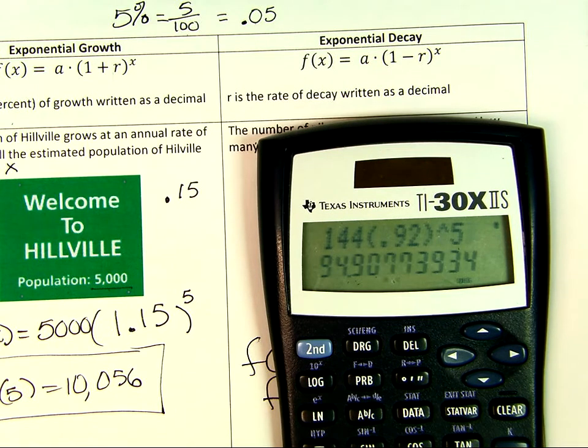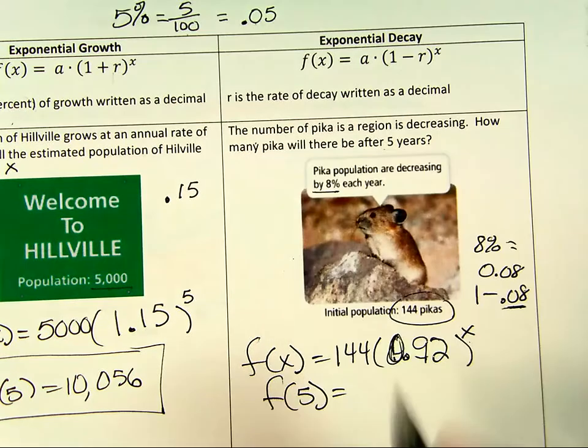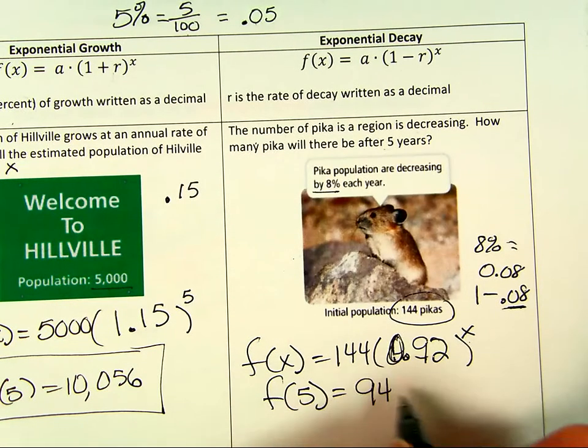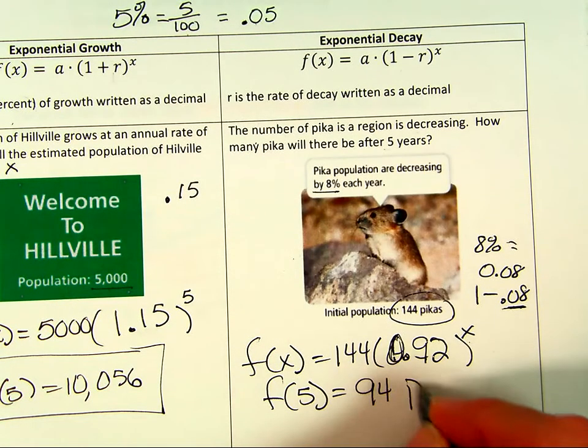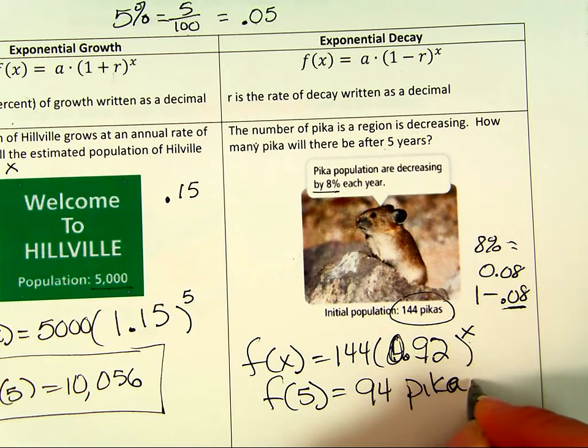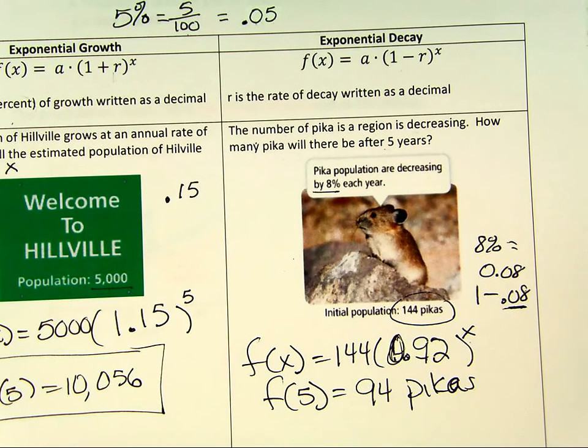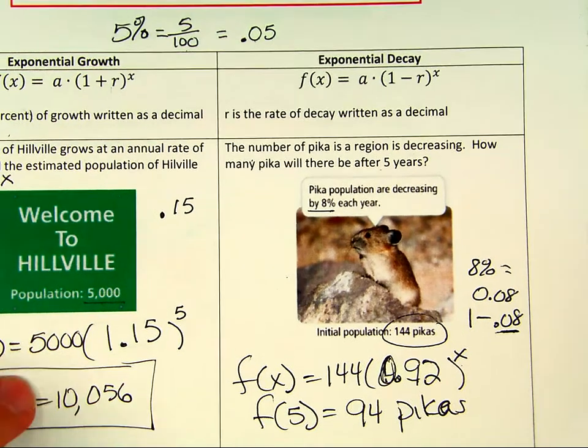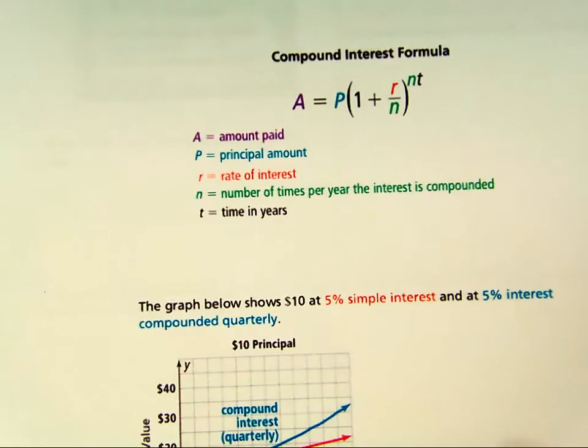We get 94. 94 little guys. And that is how we would use our growth and decay models. It's often used for population. But now there's another model that I want to talk to you about that's used a lot in the banking world.